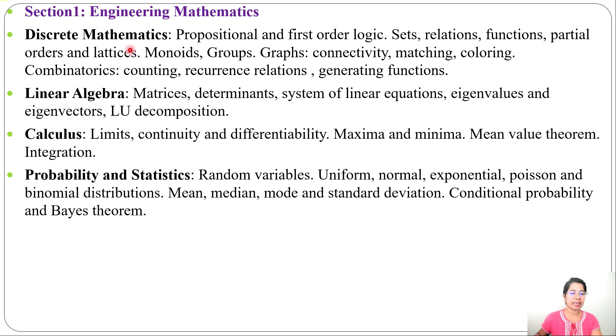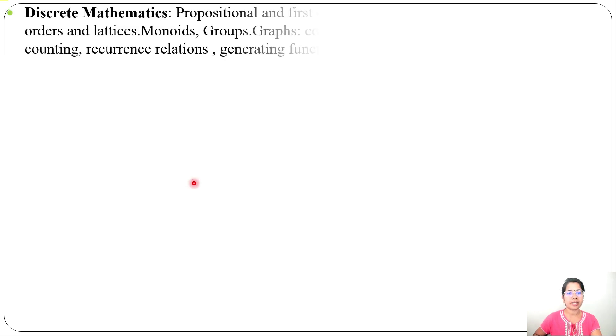Engineering Mathematics is divided into four sections: Discrete Mathematics, Linear Algebra, Calculus, and Probability and Statistics. I'll start with Discrete Mathematics.